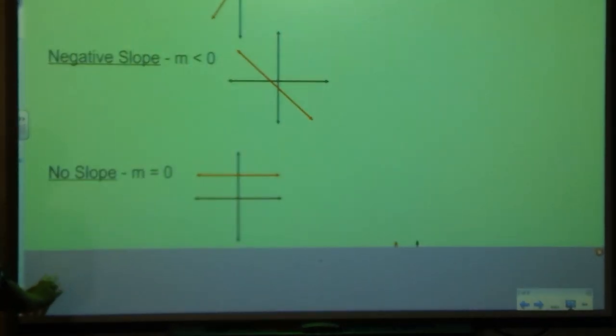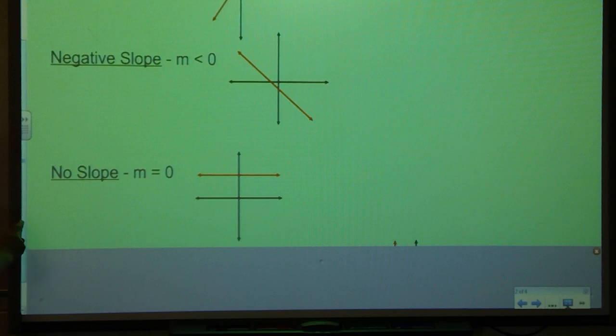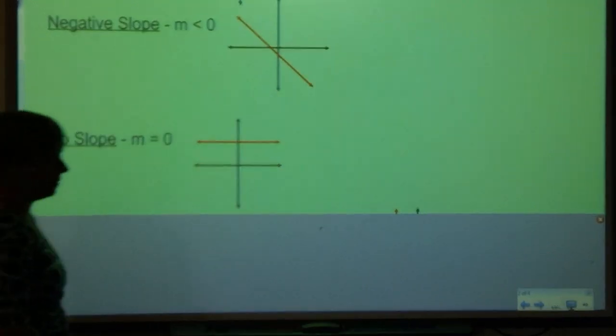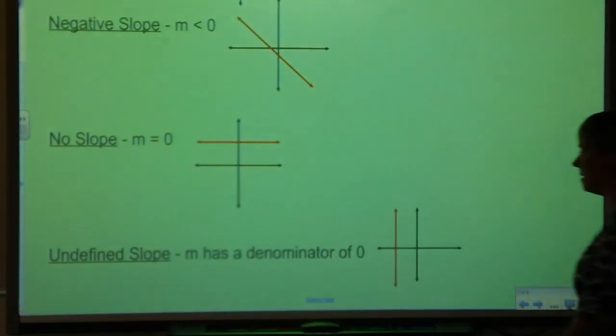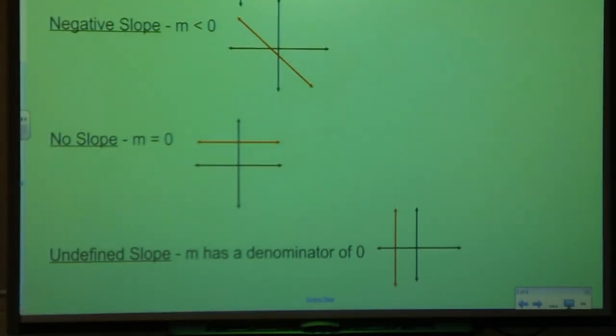I can also have a zero slope which we've already taken a look at. That would be when my slope equals 0 and looks like a horizontal line. And lastly I could also have, you guessed it, my undefined slope where m has a denominator of 0 and is that vertical line in red.